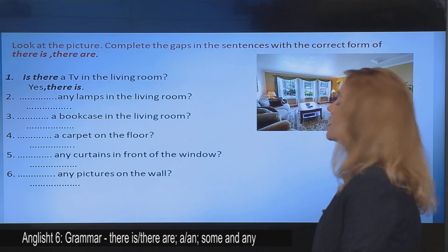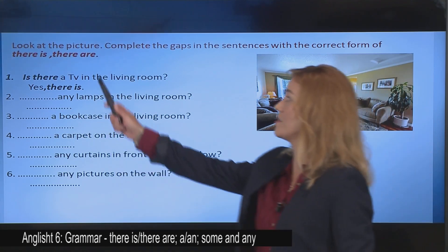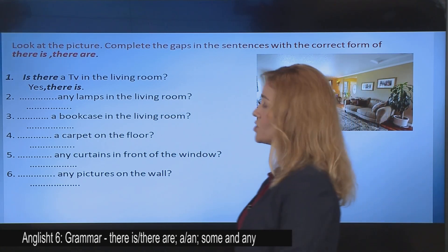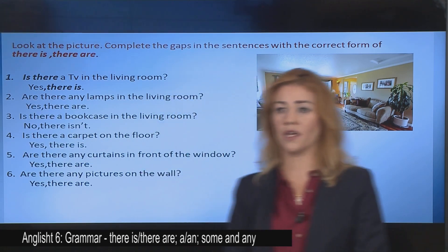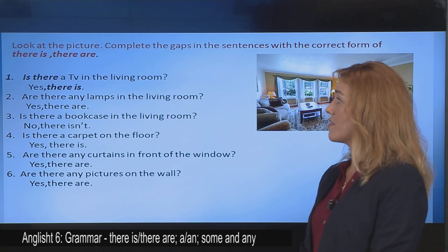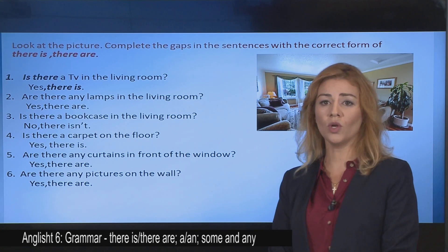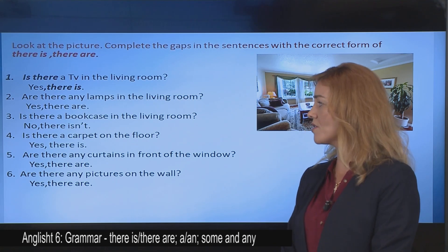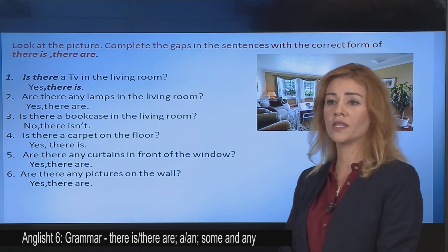Now it's your turn. Look at the picture. Complete the gaps in the sentences with the correct form of there is and there are. So you are going to see the picture and use the words to complete the gaps. Let's read them together. Is there a TV in the living room? Yes, there is. Are there any lamps in the living room? Yes, there are. Is there a bookcase in the living room? No, there isn't. Is there a carpet on the floor? Yes, there is. Are there any curtains in front of the window? Yes, there are. Are there any pictures on the wall? Yes, there are.